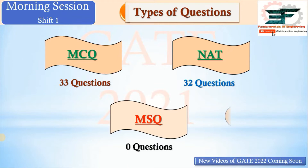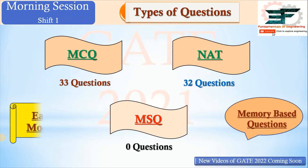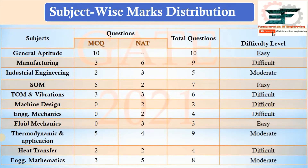Among the 65 questions, all were memory-based and the difficulty level was easy to moderate. For General Aptitude, there were no NAT questions — only 10 MCQs, and they were easy. For Manufacturing, there were three MCQ and six NAT type questions — nine total — at a difficult level. For Industrial Engineering, two MCQ and three NAT type questions at moderate difficulty. For Strength of Materials, five MCQ and two NAT — easy questions. For TOM and Vibration, three MCQ and three NAT — difficult questions.